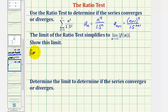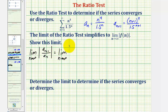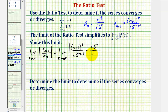So now we'll find the limit as n approaches infinity of the absolute value of a_{n+1} divided by a_n. Instead of dividing by a_n, we'll multiply by the reciprocal of a_n. So we'll have the limit as n approaches infinity of the absolute value of a_{n+1}, which is (n+1) to the fourth divided by 1.5^{n+1}, multiplied by the reciprocal of a_n: 1.5^n divided by n to the fourth.